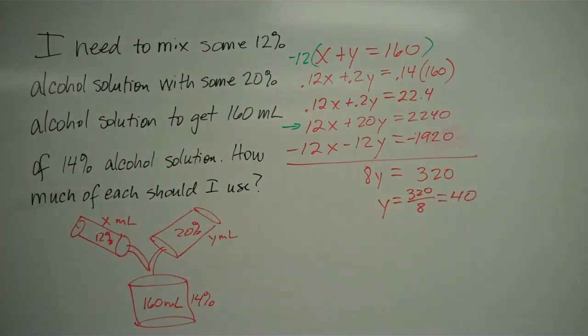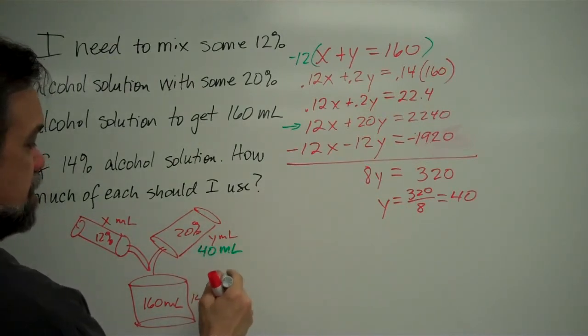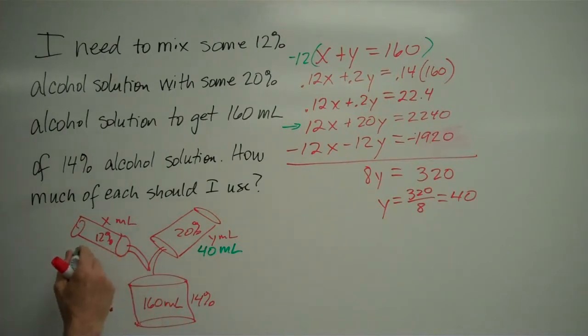So what does that mean? It means I'm using 40 milliliters of the 20% solution, which means I must have 120 milliliters of this 12% solution, since they both equal up to 160.